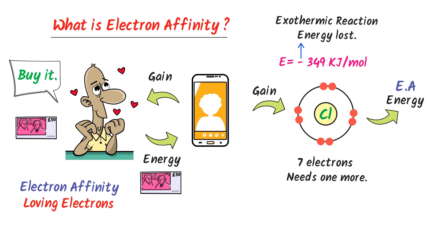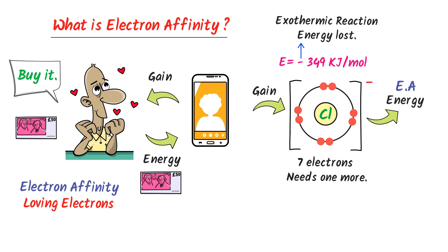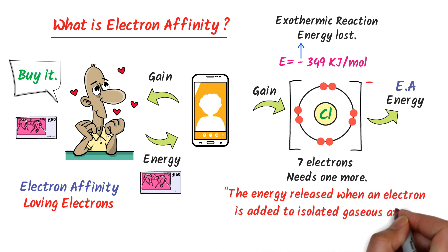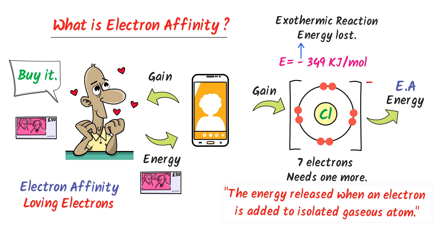Now we can see that this chlorine has gained one electron, so a negative charge will appear on this chlorine atom. Therefore, we define electron affinity as the energy released when an electron is added to an isolated gaseous atom to form a negative ion. Thus remember that electron affinity is energy released when an atom gains an electron.